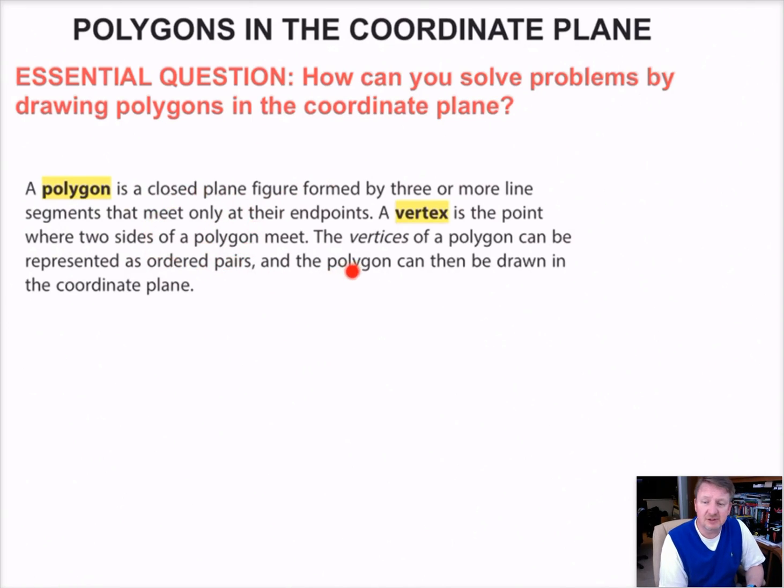A couple definitions here that you need to be aware of. These are important. I would write these down in my Cornell notes if I were you. A polygon is a closed plane figure formed by three or more line segments that meet only at their endpoints. So a couple things here. Plane means it's flat. Line segments are short lines. They have endpoints, and these polygons meet at their endpoints. Let's draw an example real quick. It says three or more, so here's three lines, and they're meeting at their endpoints. That's an endpoint, that's an endpoint, that's an endpoint.